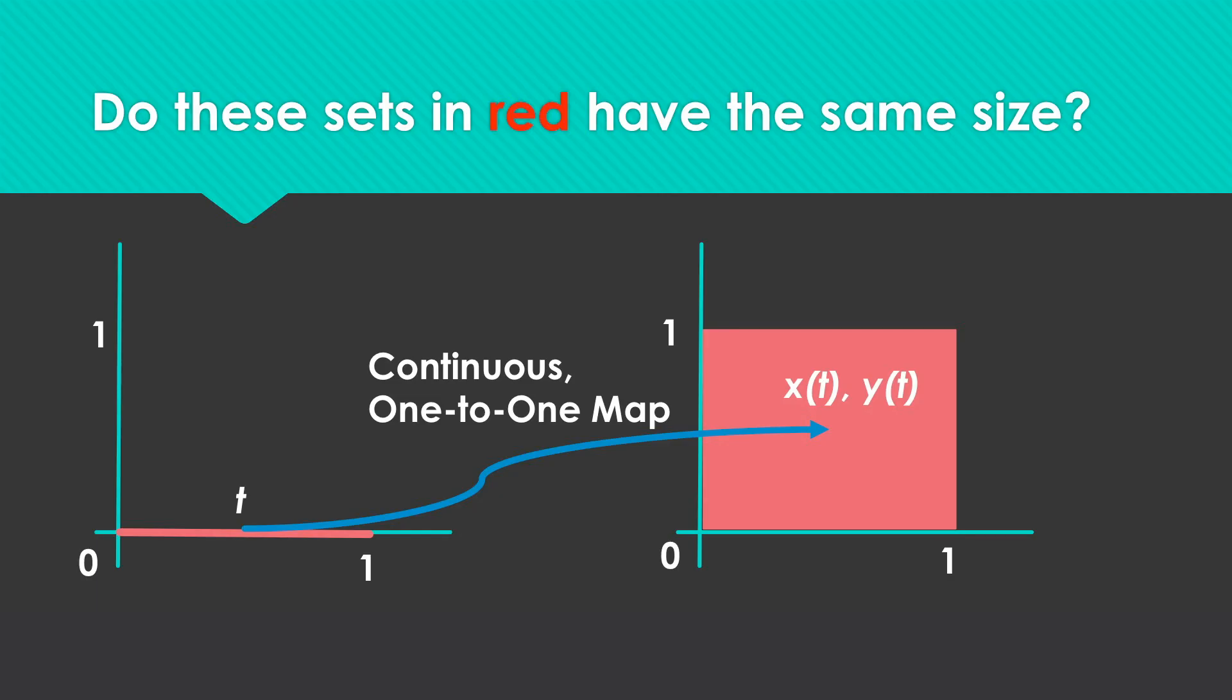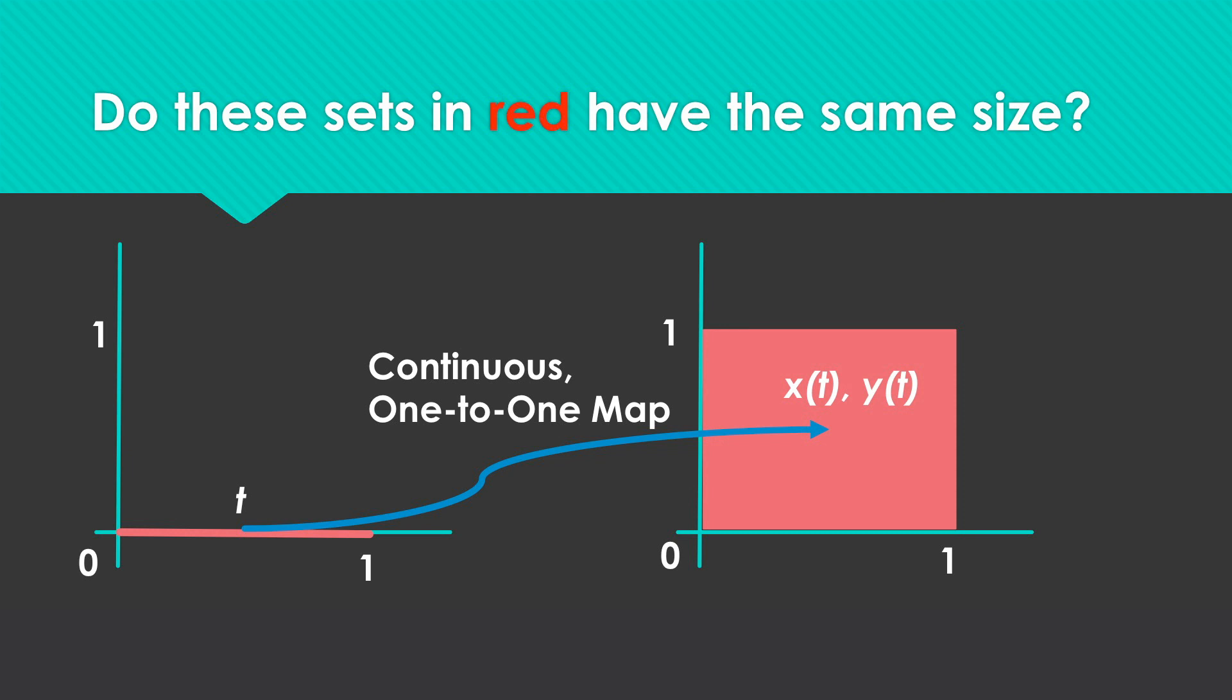On this slide I show you two other sets, each of which has infinitely many numbers. On the left graph you see that I've indicated a set in red which is the set of all real numbers from zero to one. On the right hand side I've indicated all pairs of real numbers from zero to one, i.e., those numbers that lie in the square. Now I ask you a question: do these sets have the same size?